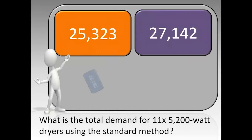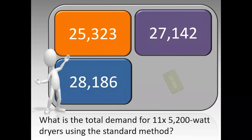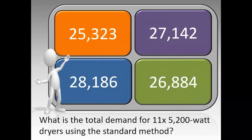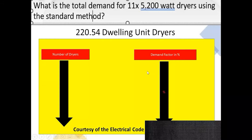What is the total demand for 11 5,200-watt dryers using the standard method? The correct answer is 26,884.